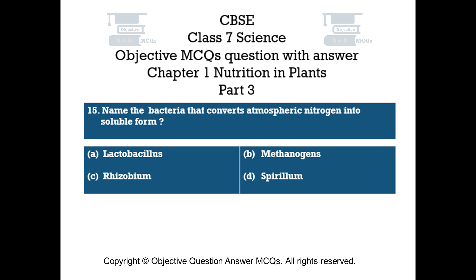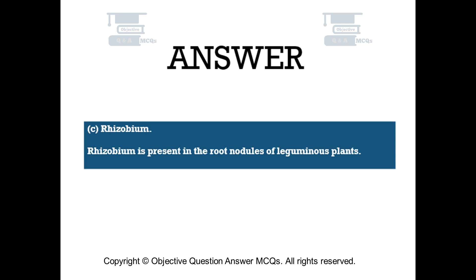Question number 15. Name the bacteria that converts atmospheric nitrogen into soluble form. Option A: Lactobacillus. Option B: Methanogens. Option C: Rhizobium. Option D: Spirillum. The right answer is option C: Rhizobium. Rhizobium is present in the root nodules of leguminous plants.